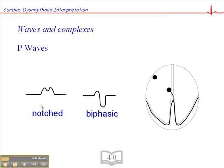So let me give you an example. So here is an example of a notched P-Wave, and here's an example of a biphasic P-Wave.